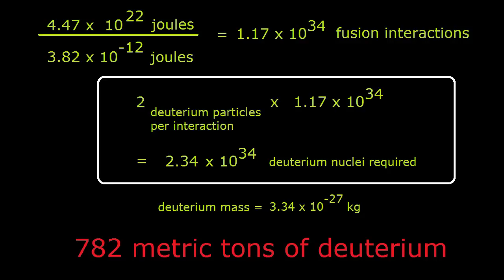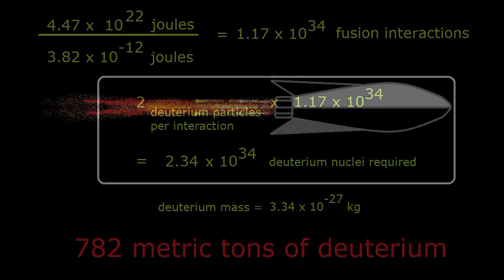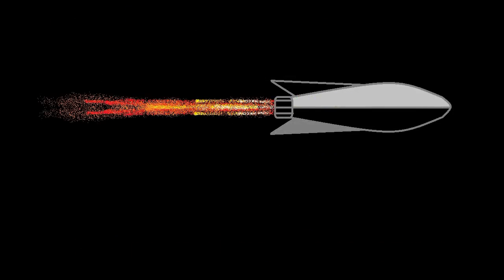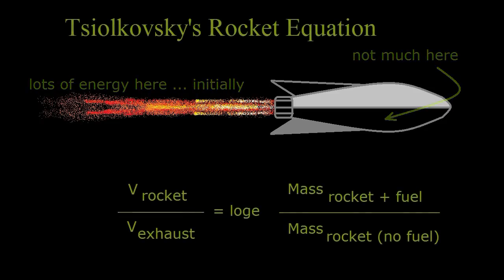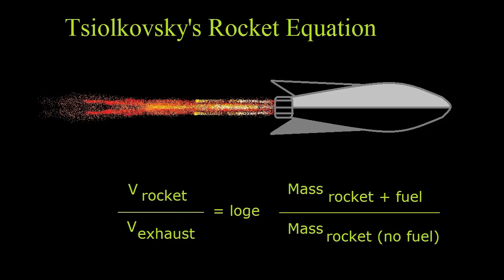That doesn't seem like much compared to the 100,000 metric tons of the craft we are propelling, but we have now to deal with Tsiolkovsky. When a rocket accelerates at the beginning, most of the energy goes off with the exhaust that we're pushing off on.